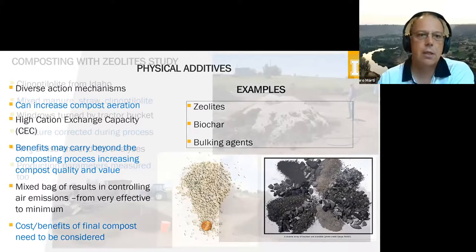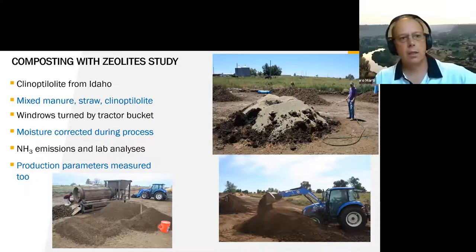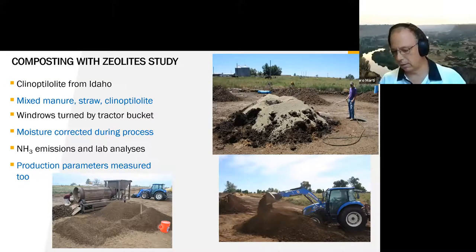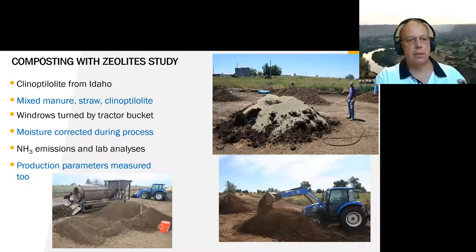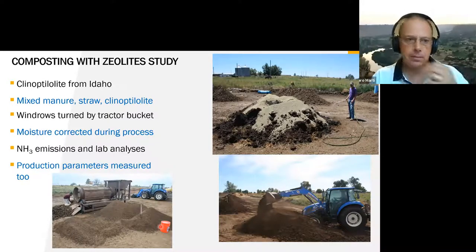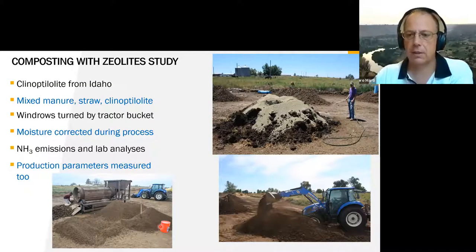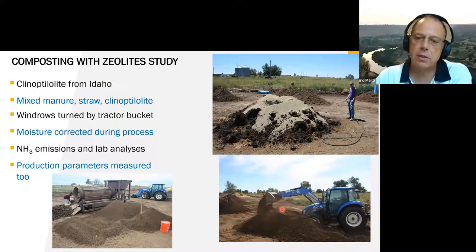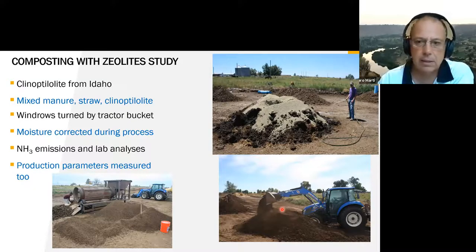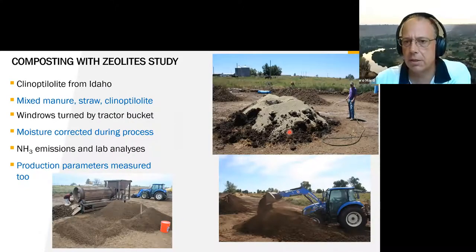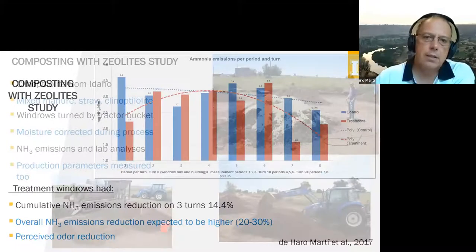For zeolites, I did an on-farm study where we added clinoptilolite zeolite from Idaho to dairy mixed manure and some straw. The windrows were turned with a tractor — I didn't have a compost turner — and we corrected moisture throughout the whole process to ensure a true composting process. We captured ammonia emissions and did lab analysis. In the top picture you can see the zeolites before mixing with the tractor; we then built the windrow and screened it at the end.